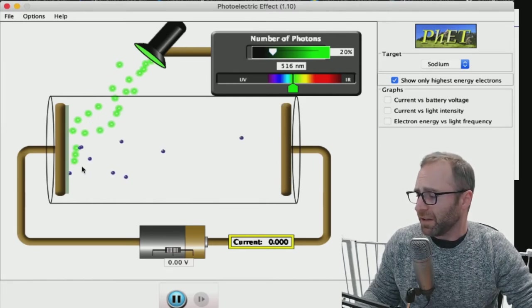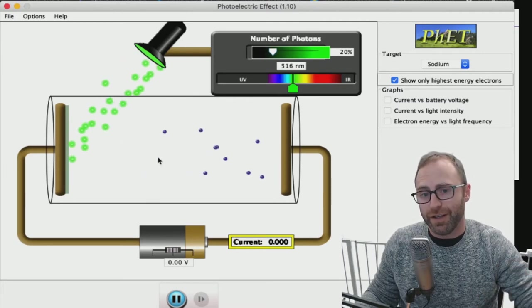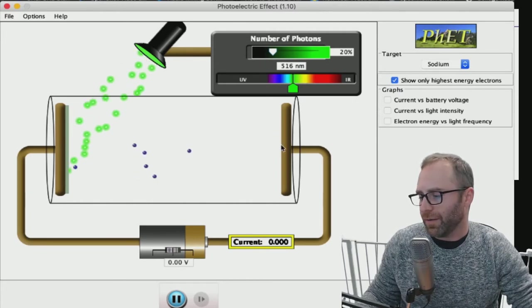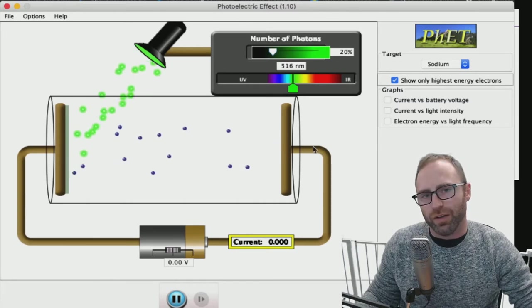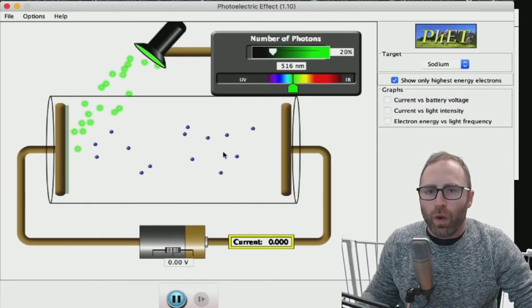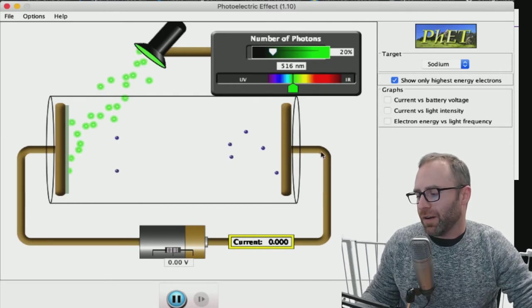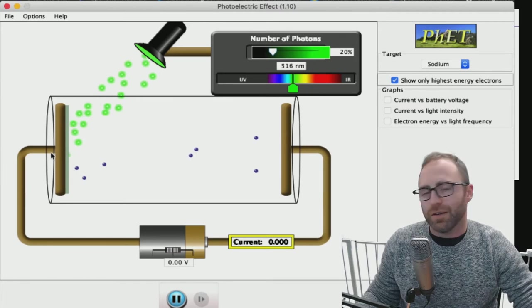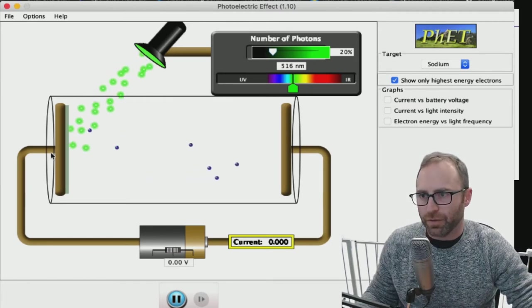So we're actually causing these electrons to get ejected and they're floating through the vacuum of space or through this vacuum to the other side. Now the way that we keep this all electrically neutral is that we have this plate over here connected by a wire and then we're able to go through to the other side and so the electrons are able to close the circuit so everything's still nice electrically neutral. Fantastic.